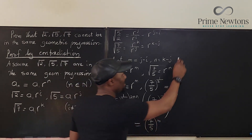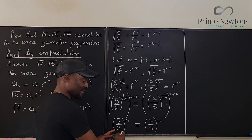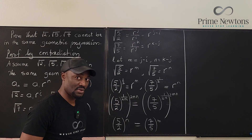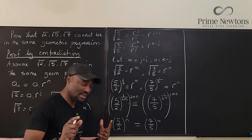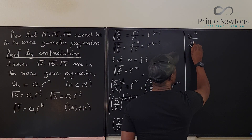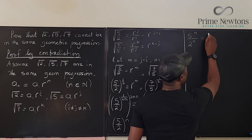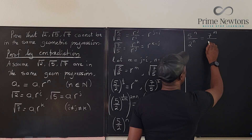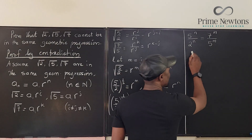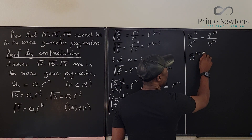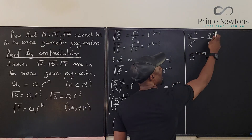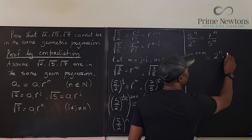Now we can split these fractions. We have 5^n over 2^n equals 7^m over 5^m. Cross-multiplying gives 5^n · 5^m = 2^n · 7^m, which is 5^(n+m) = 2^n · 7^m. And this is where the problem arises.